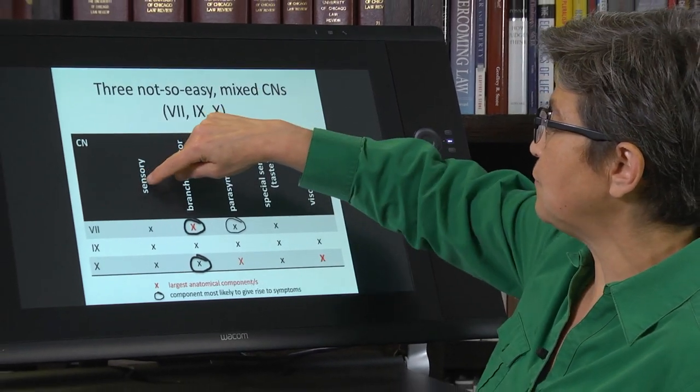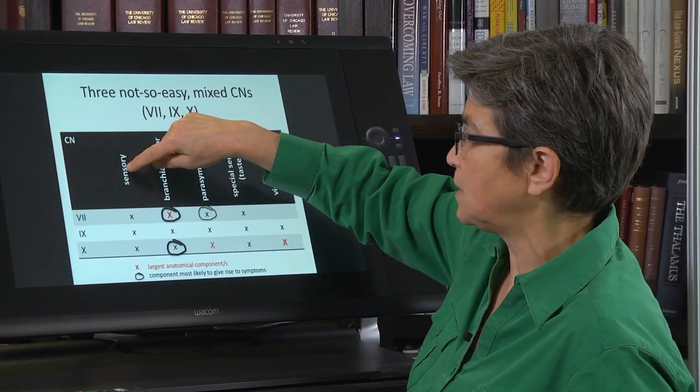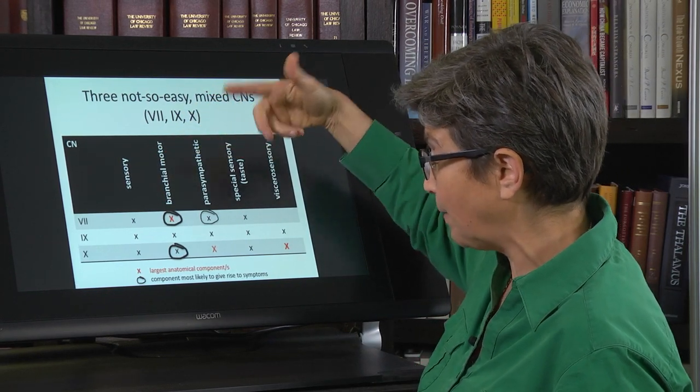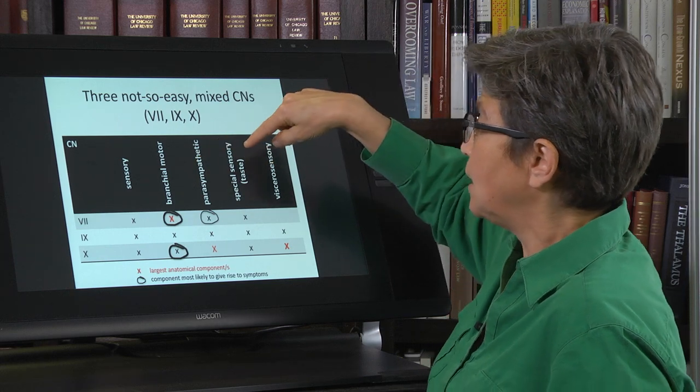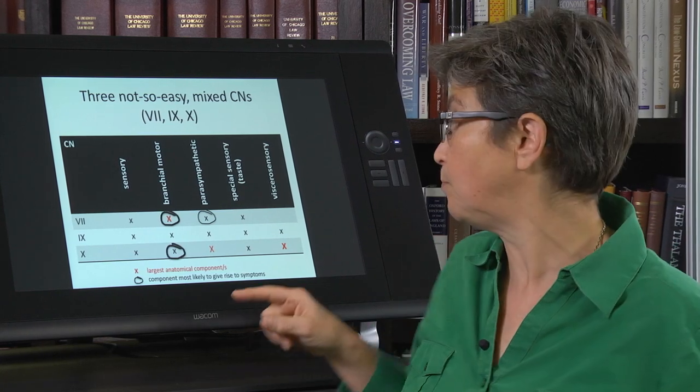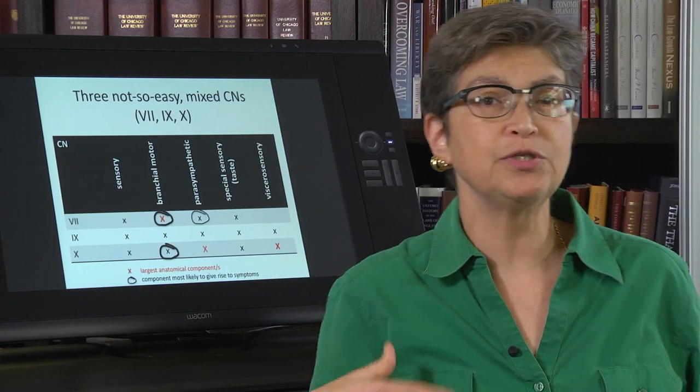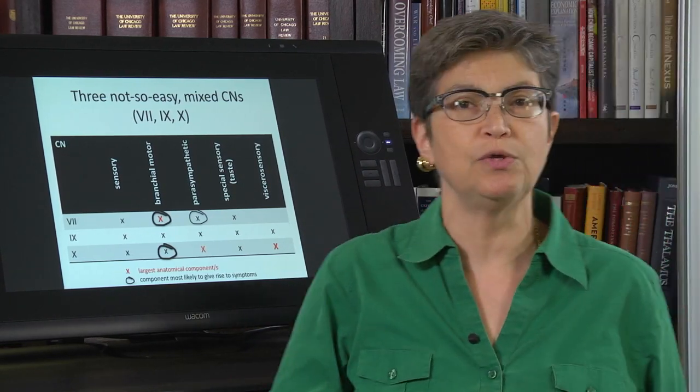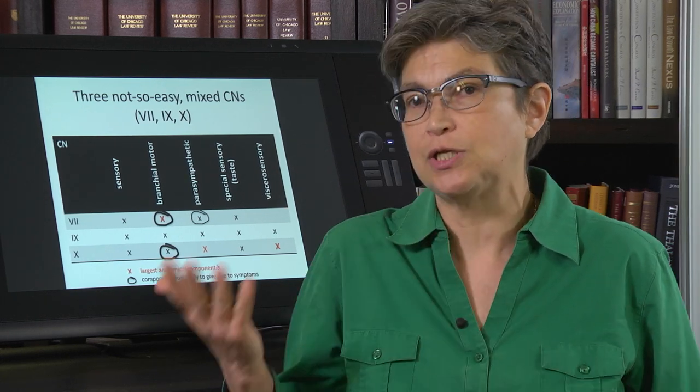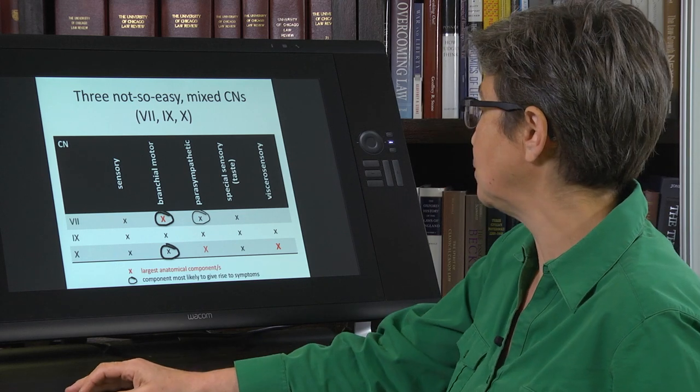So each of them has either four or five different components, a somatosensory component, a branchial motor component, a parasympathetic autonomic outflow component, a special sensory component, not olfaction or vision, which we've already seen, but taste in this case, and also a viscerosensory. Viscerosensory refers to information that's coming in from the viscera. And in this case, it's information such as oxygen saturation or blood pressure. So let's just get started. We'll go through seven first.